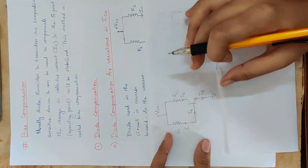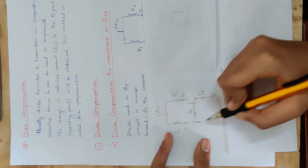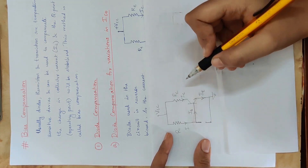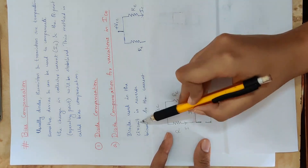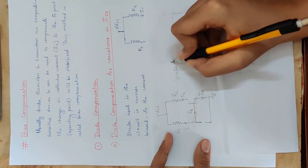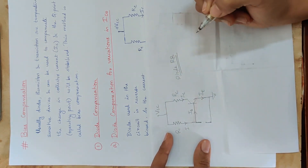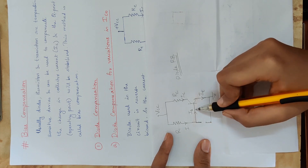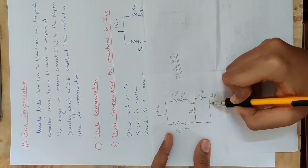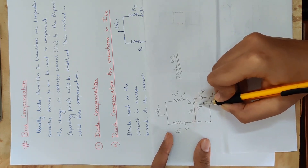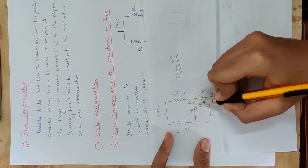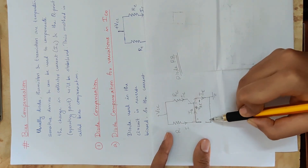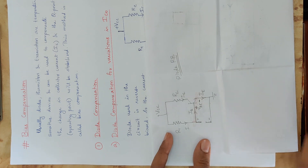Diode compensation means we need to connect a diode. The diode is connected to the base, and the emitter is connected to this diode. Now we connect the reverse biased side — the diode used in the circuit is reverse biased. The voltage across the base-emitter junction is VBE.